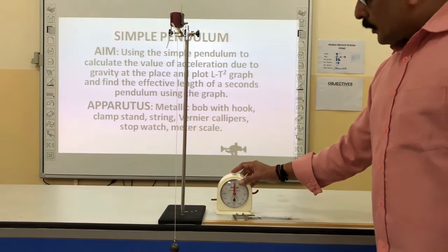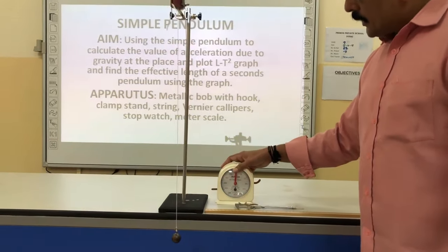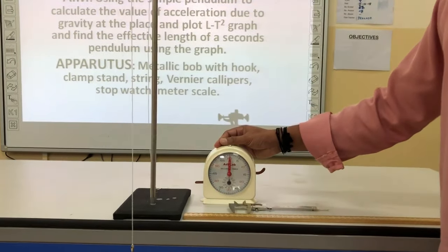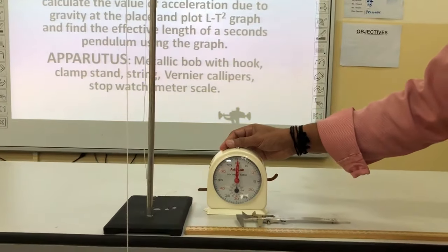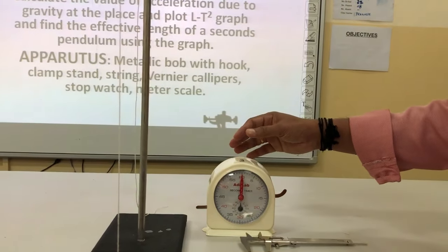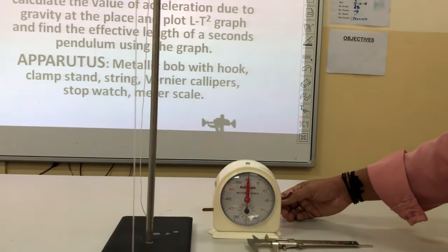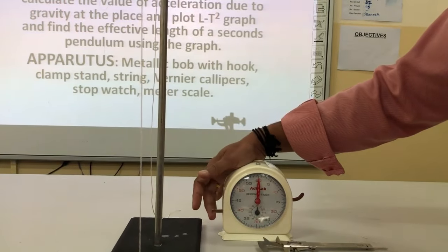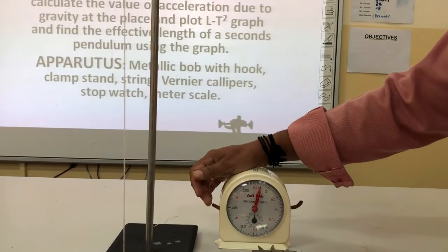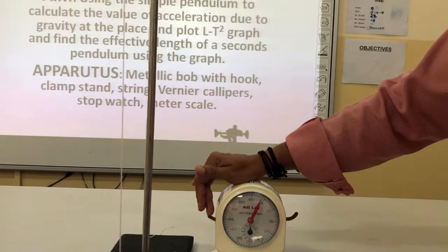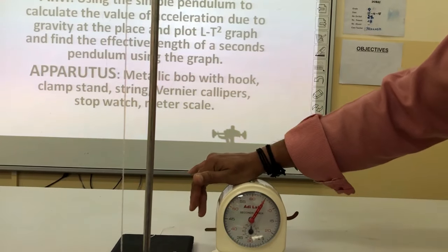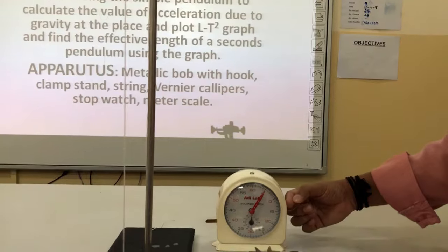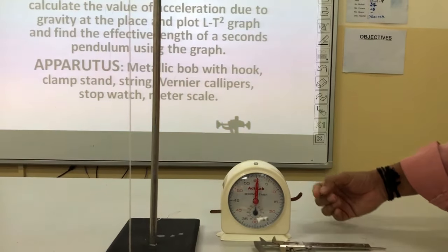This is the stop clock. The stop clock is used to find the time taken for a number of oscillations. We press the switch to set it in motion, and pressing it down again will stop the stop clock. This other switch will reset it back to zero.